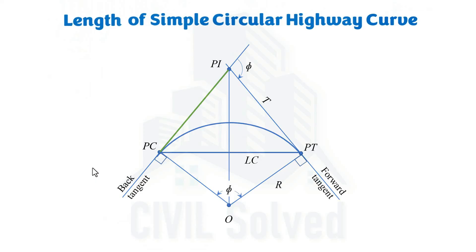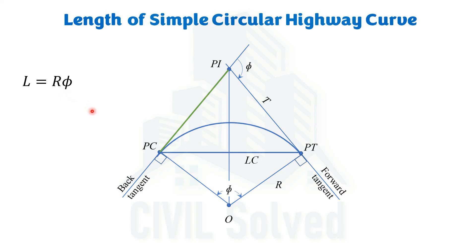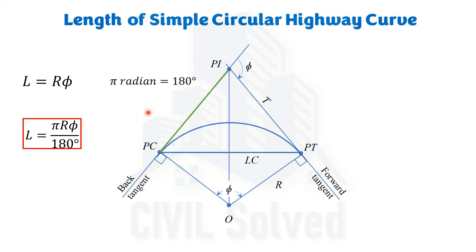Moving on to the last distance — the length of the simple circular curve, which is the distance from PC to PT measured along the curve. Since this is part of a circle, we use the basic formula for the length of any arc segment: L = R·φ, where φ is the central angle in radians. To convert to degrees, recalling that 1 radian = 180 degrees, the formula for the length of the curve becomes L = πRφ/180. Again, the equation contains two variables: radius and deflection angle.